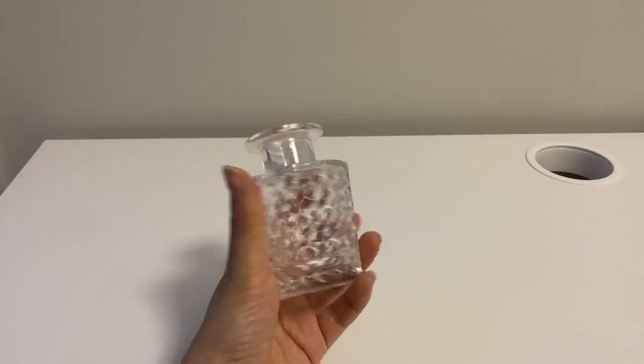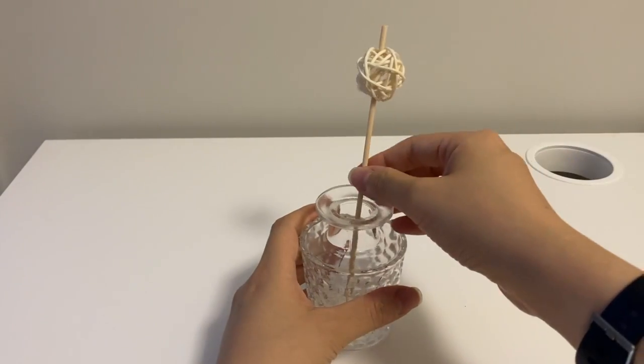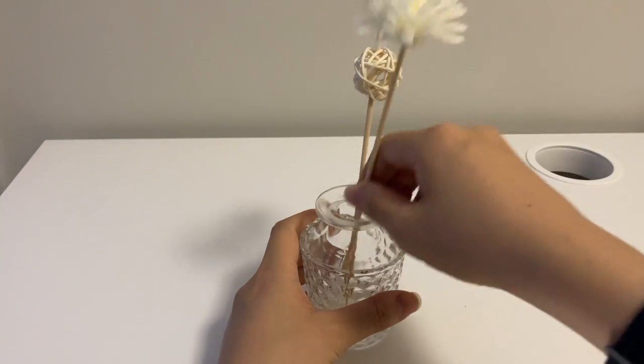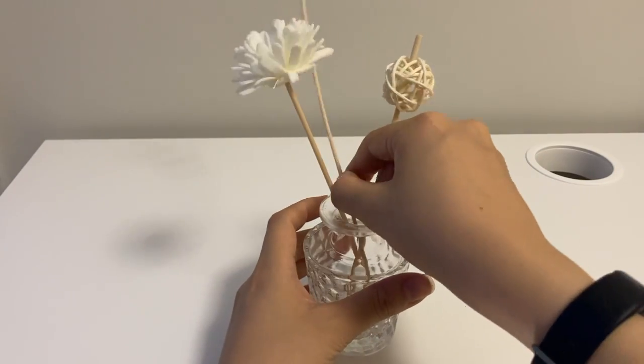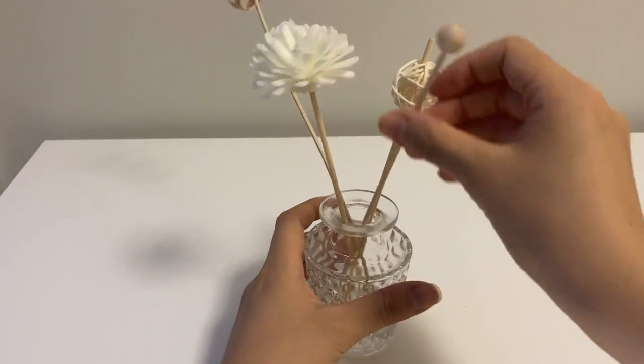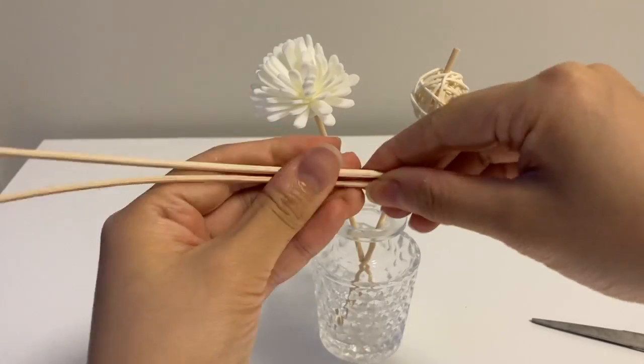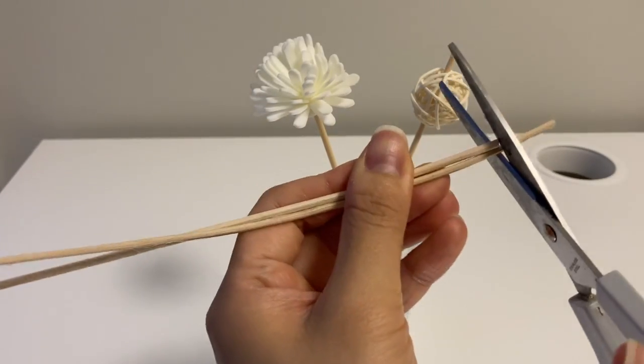Now I have all the ingredients. I'm going to start with this bottle with the pattern first and we'll arrange these reeds until I reach the design I'd like. Then I trim down the reeds to the length that suits the height of the bottle.